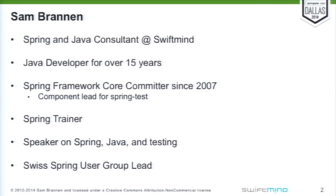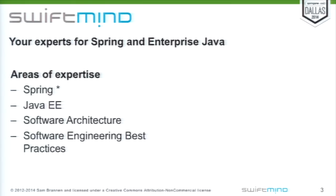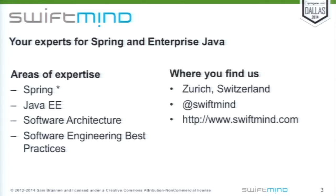So that's enough about me and my credentials. Quickly, a bit about my company — we're experts in Spring and Enterprise Java. Areas of expertise are Spring Star, so the Spring Portfolio, Spring I.O., Java EE in general, software architecture, and engineering best practices. You can find us on-site in Zurich, Switzerland, but also online on Twitter or on the website, swiftmine.com.